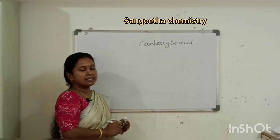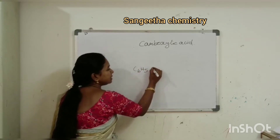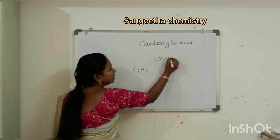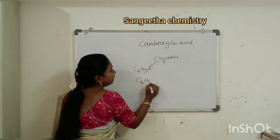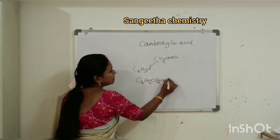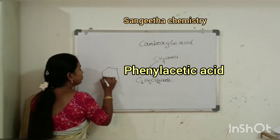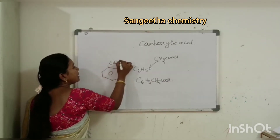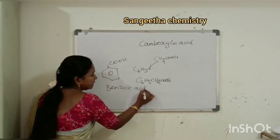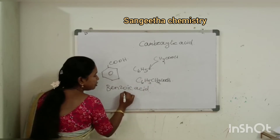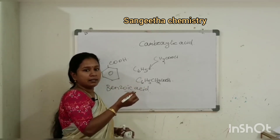For example, phenyl acetic acid: phenyl is C6H5, and acetic acid is CH3COOH. Removing one hydrogen and attaching the phenyl group gives C6H5-CH2-COOH — phenyl acetic acid. Benzoic acid has a benzene ring directly attached to COOH. The naming ends in -ic acid.